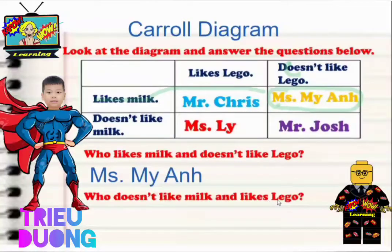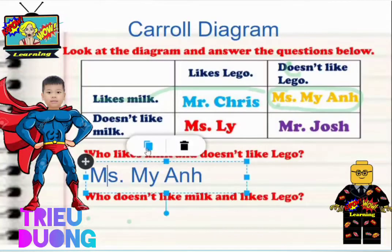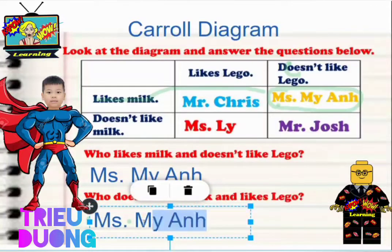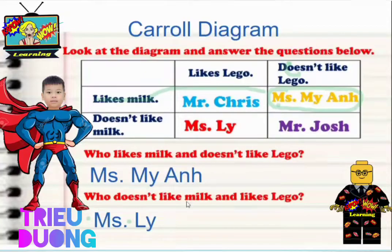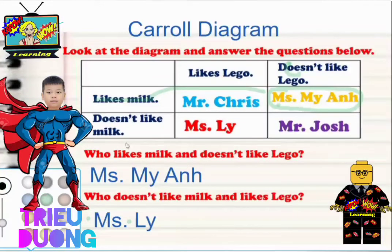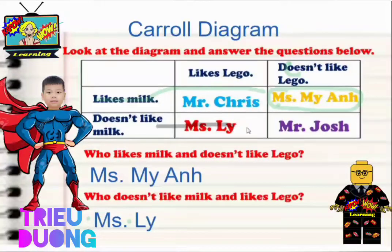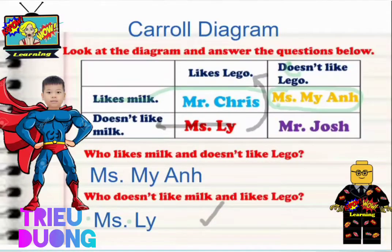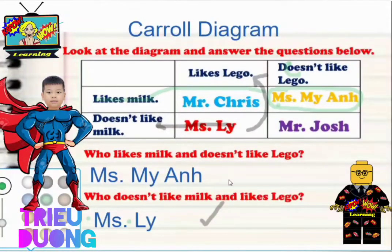So, Chio Zung, who doesn't like milk and likes Lego? That is Miss Lee. So let's have a look. I'm going to get my names up here — let's get Miss Lee and we'll see if you're correct. Who doesn't like milk and likes Lego? Let's highlight this in black. Well done, Miss Lee — doesn't like milk, and we go all the way up to the top, she likes Lego. So that is superb. Is that okay, Chio Zung? Yes, it's okay.